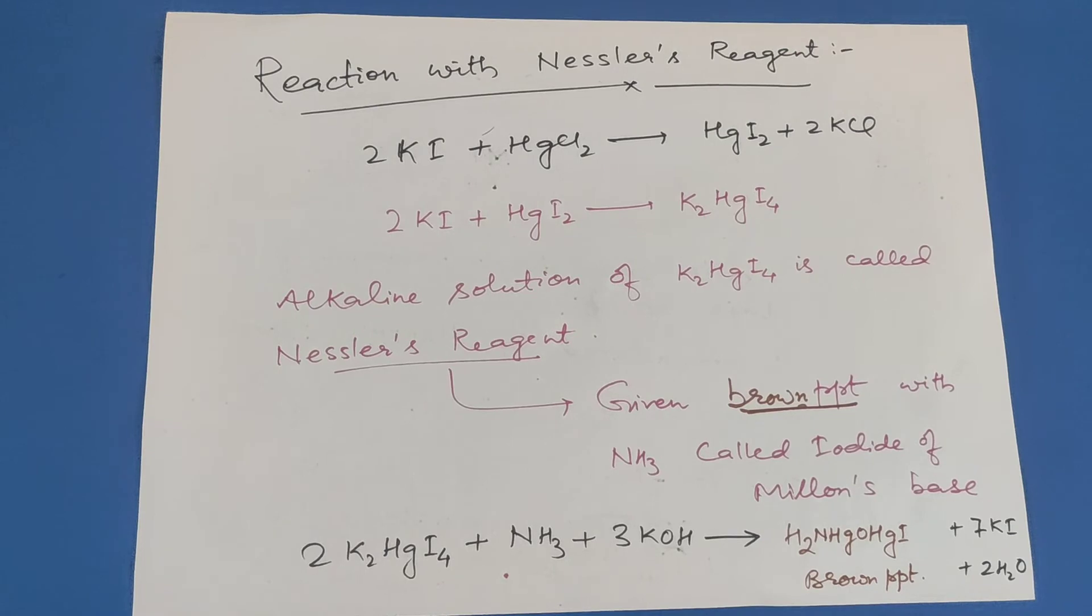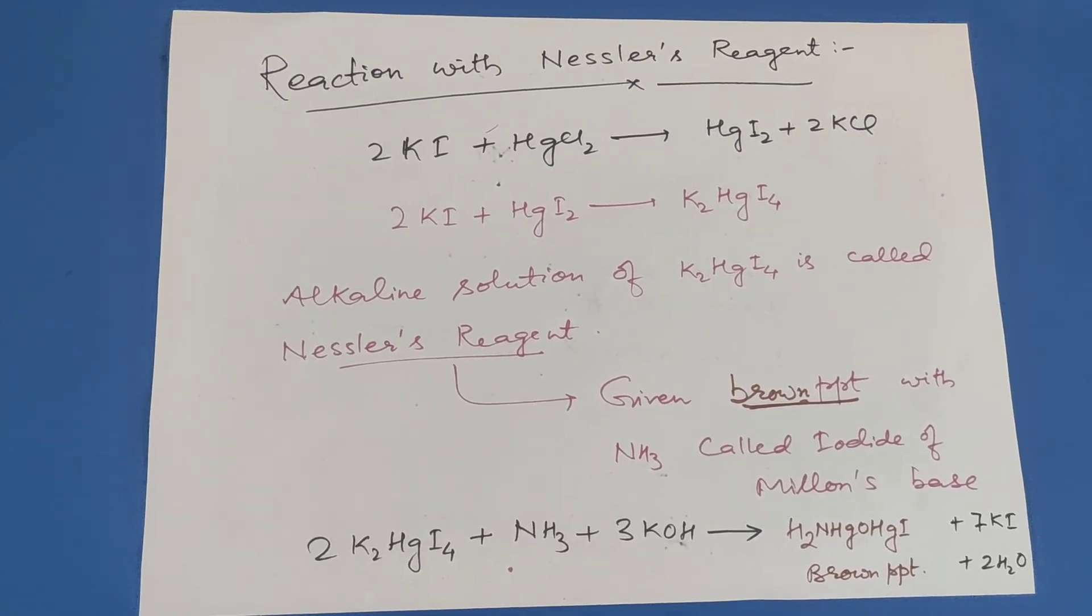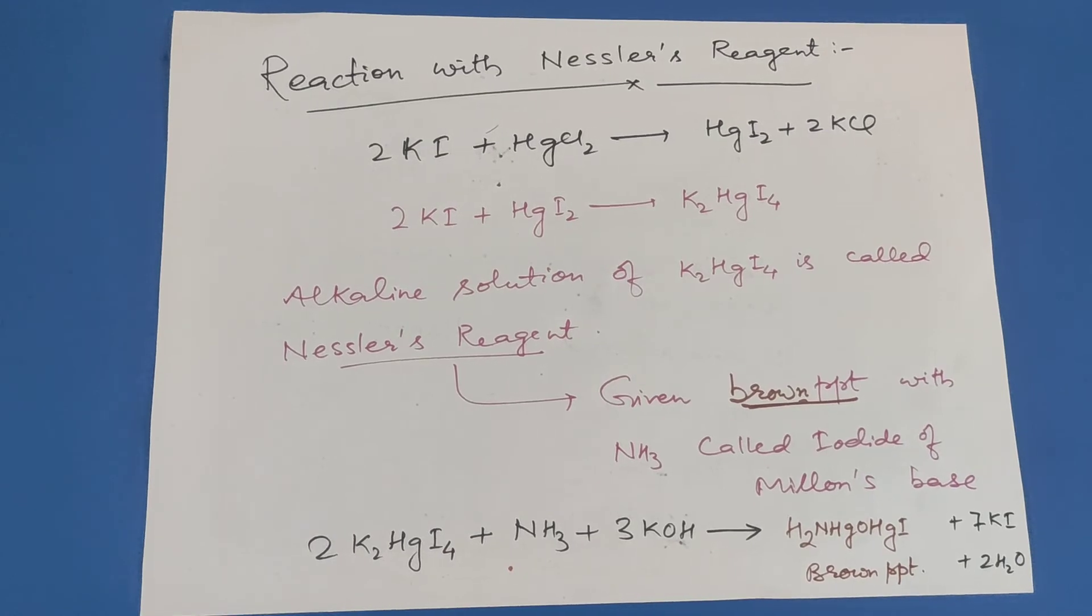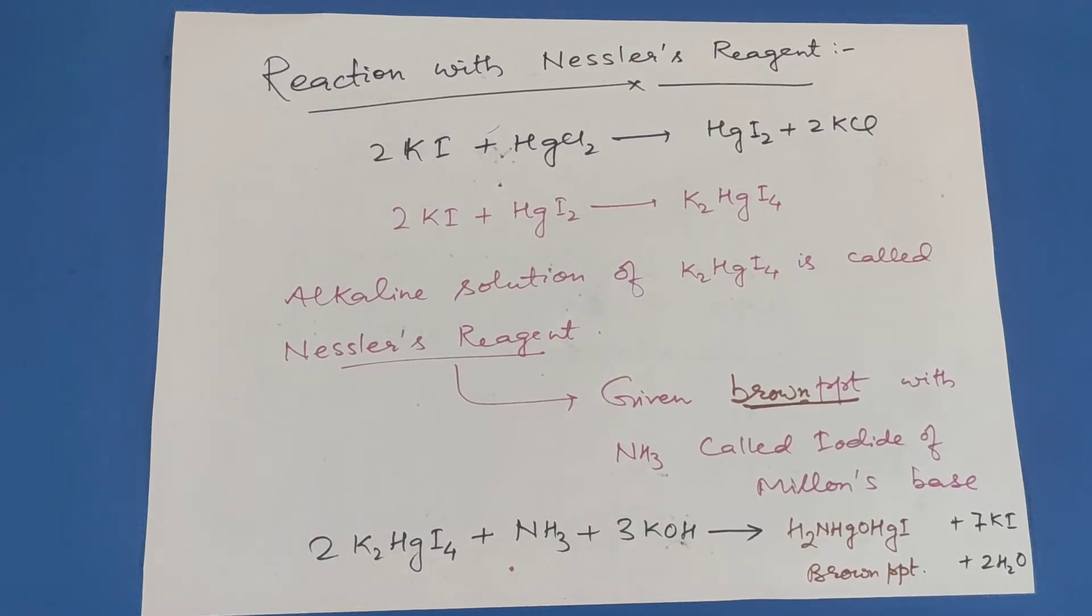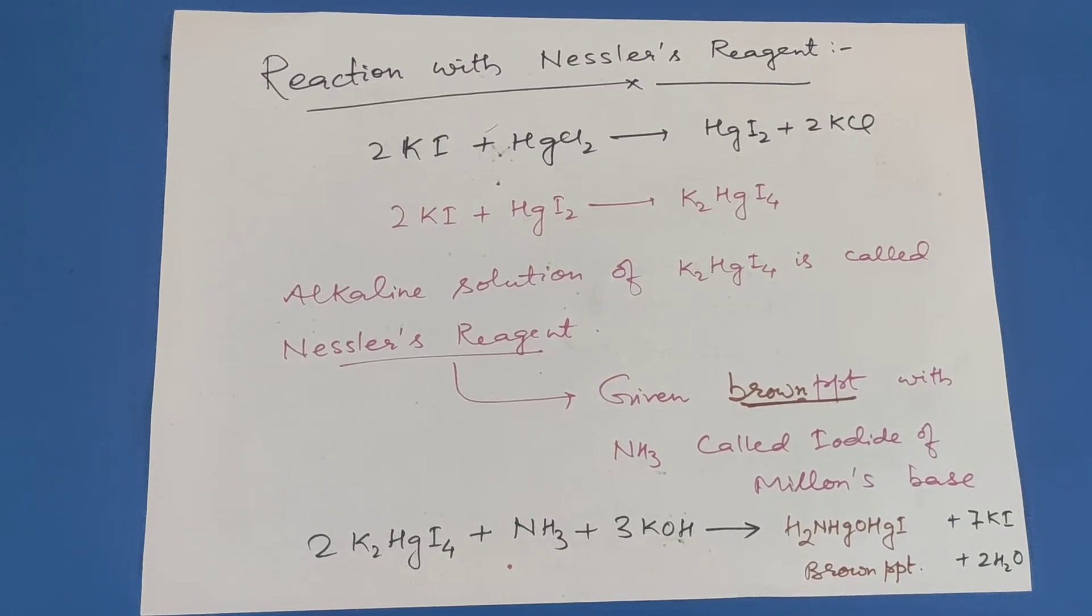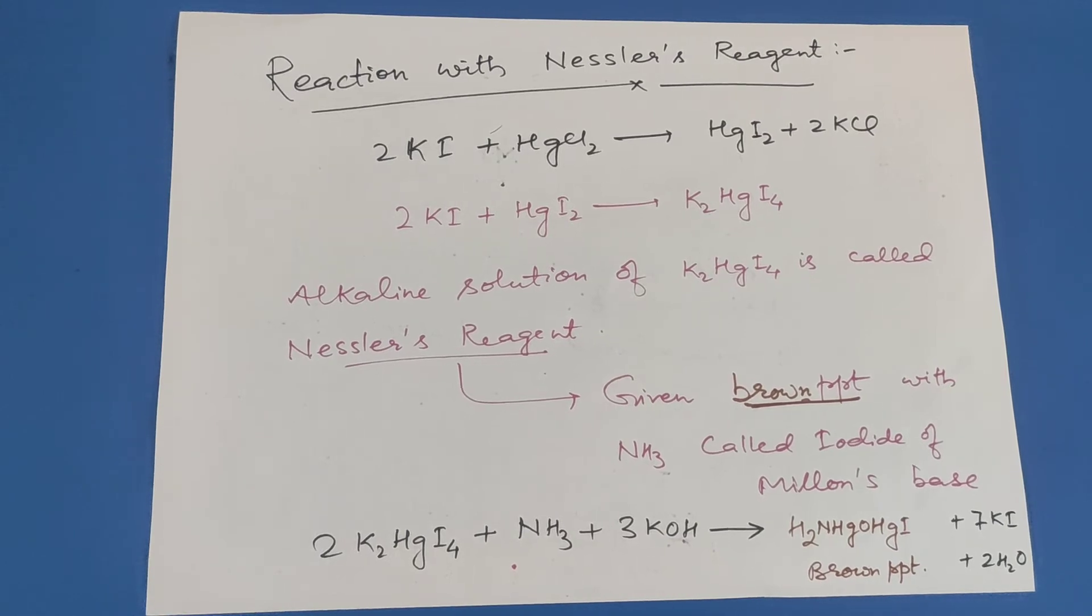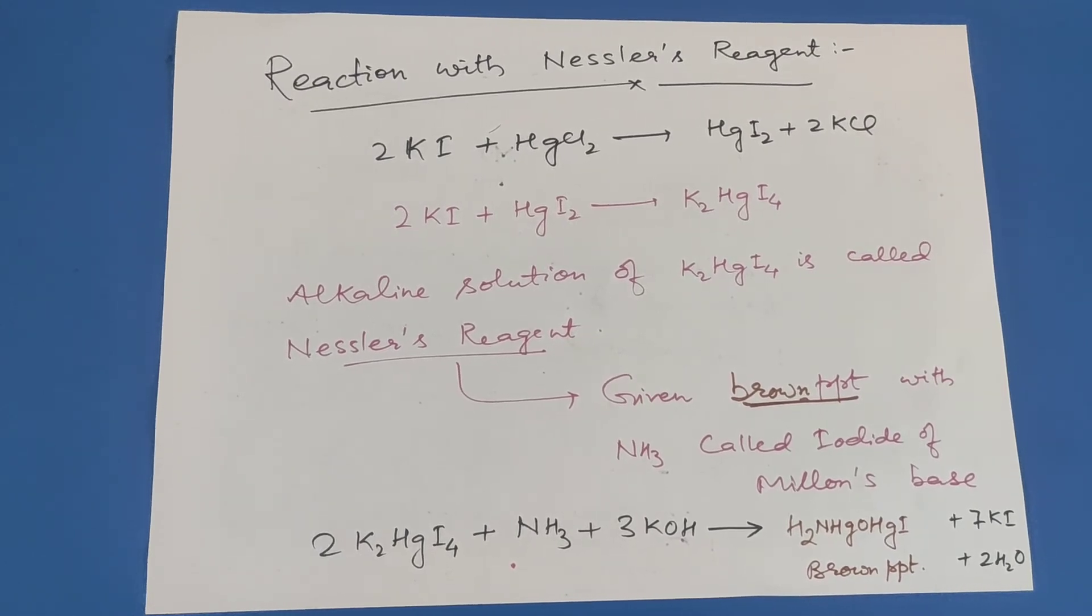Nessler's reagent gives brown precipitate with ammonia called iodide of Millon's base. So 2K2HgI4 plus ammonia plus KOH gives H2NHgO·HgI, that is iodide of Millon's base, which is a brown precipitate, plus potassium iodide plus water.